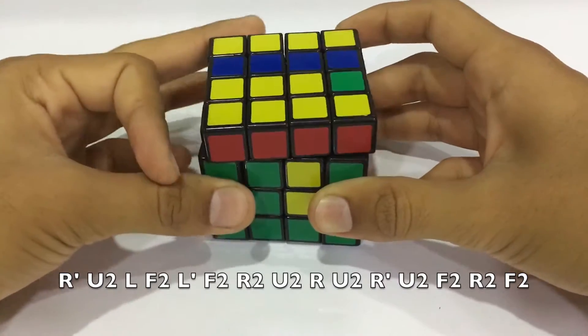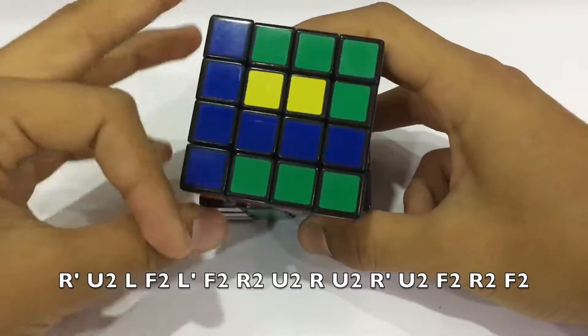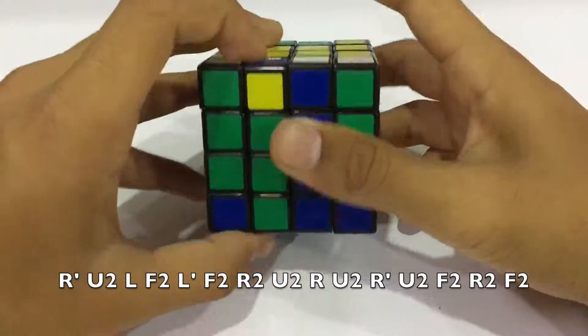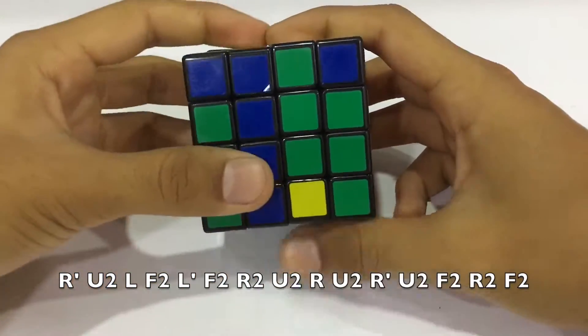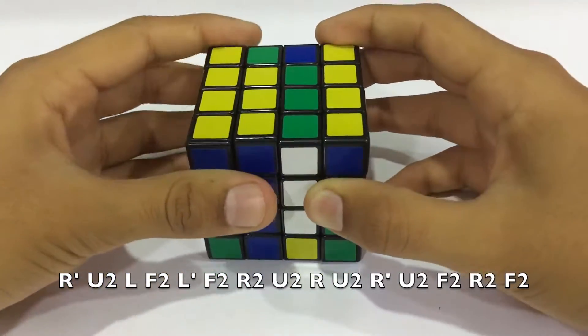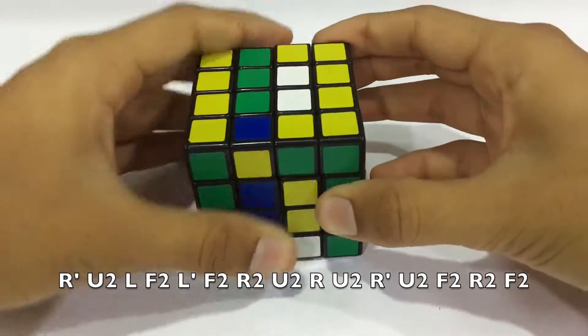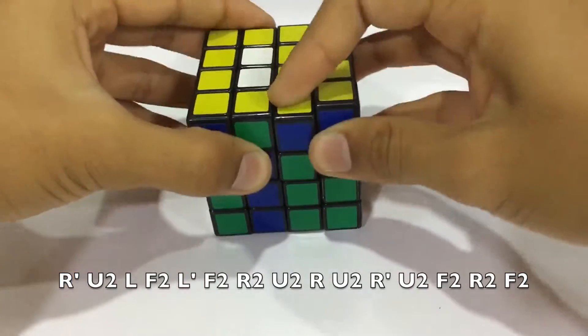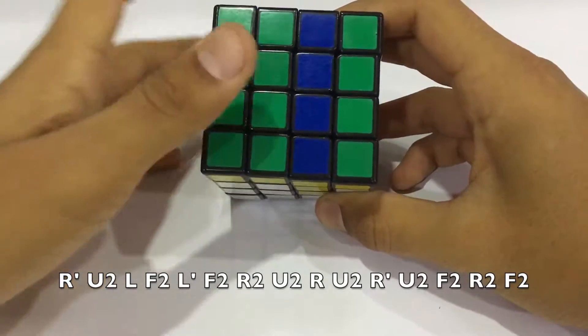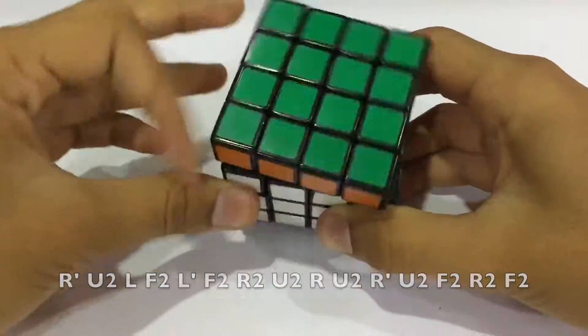R inverted, U2, L, F2, L inverted, F2, then two times right, U2, then right, U2, right, U2, R inverted, U2, F2, right two times, then front.